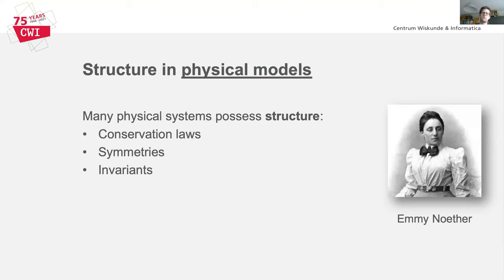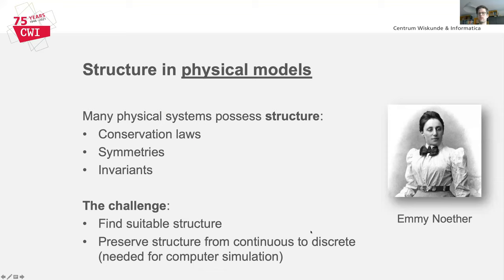Many physical models possess a certain kind of structure. For example, when formulating the equations of motion for the double pendulum, it turns out there is a hidden conserved quantity known as the Hamiltonian, which expresses that energy is conserved by the system. More generally, there is a deep connection between conservation laws and symmetries in physical systems, which was formalized by Emmy Noether. When simulating physical systems on a computer, it is of critical importance to detect which conservation laws, symmetries, or invariants are important for the system under consideration, and to preserve them when discretizing from a continuous to a discrete setting.